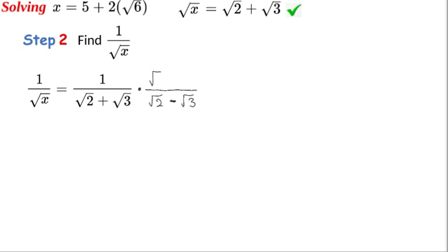If we multiply above and below by that factor, let's multiply it out. For the numerator we will get √2 - √3. Below, we have the difference of two squares.